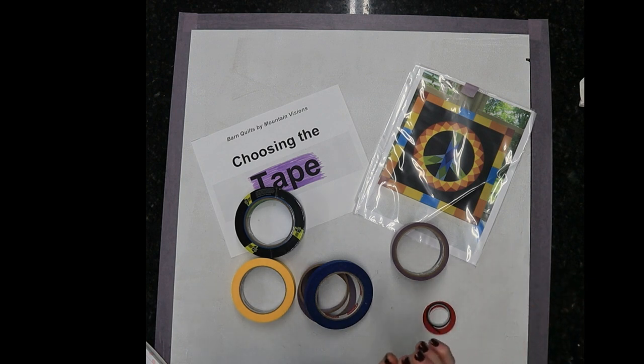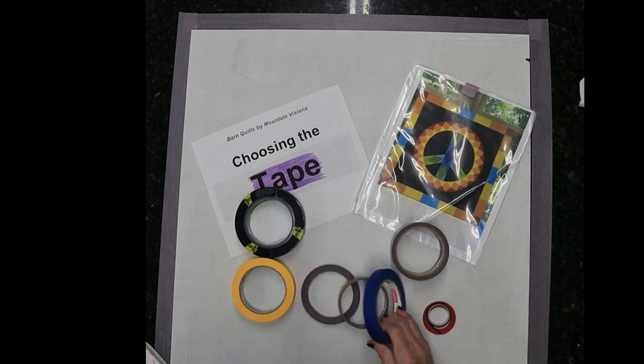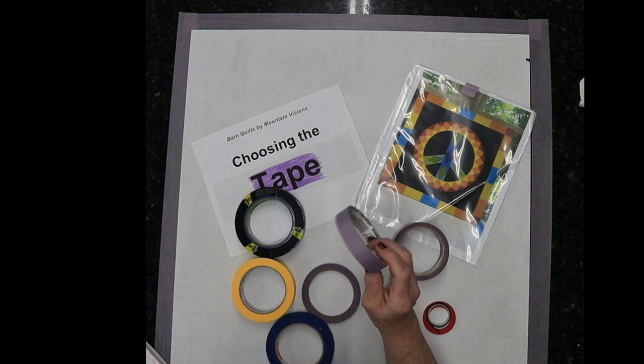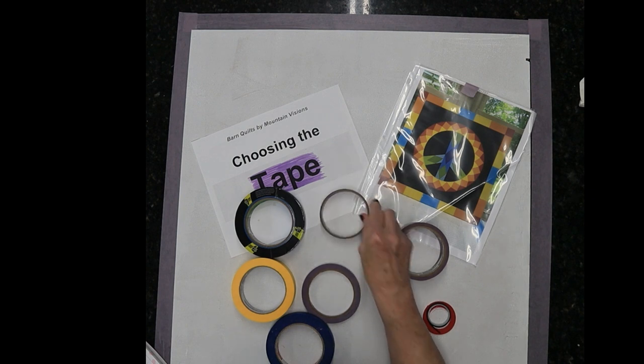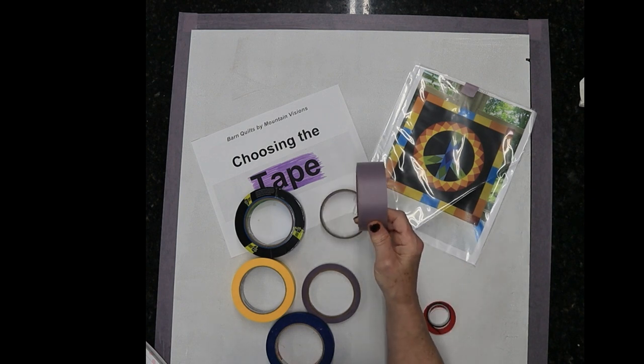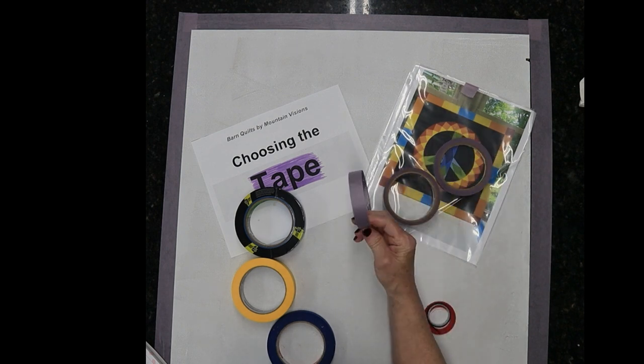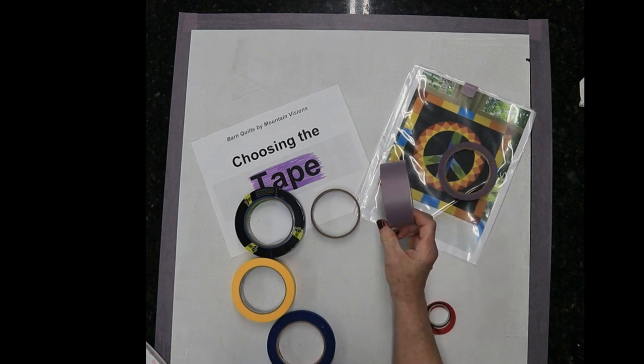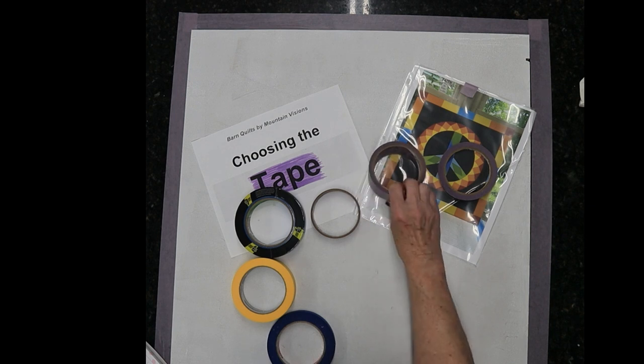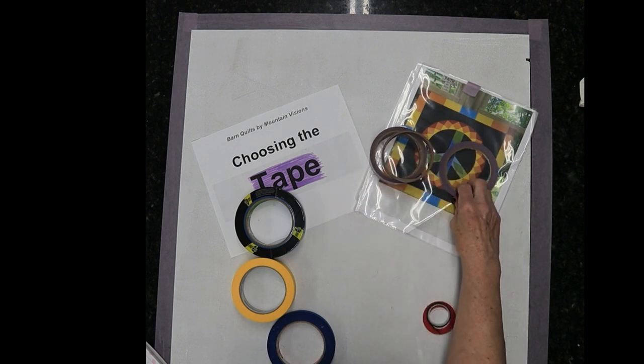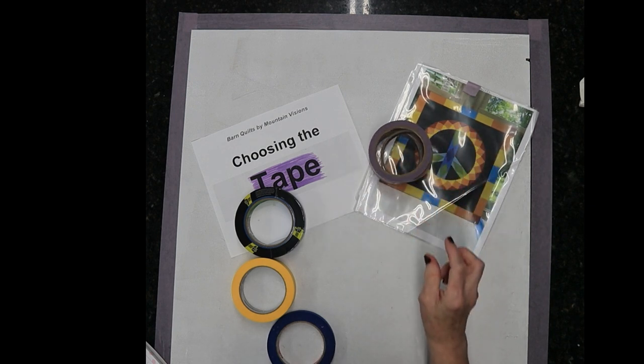I started out with the Scotch tape delicate surface and I love it. I've got it in all different sizes. It comes in this quarter inch, this is the half inch, and then I have it in the one inch and one and a half inch. It's really good tape and I like it.